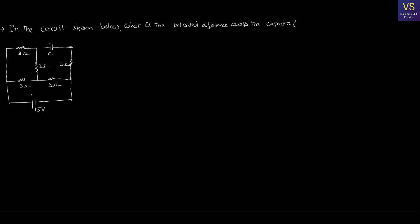In this video, we are going to solve a problem. There is a circuit, and you want to calculate the potential difference across the capacitor of the circuit. Here is the capacitor C, and you want to calculate the potential difference across it.